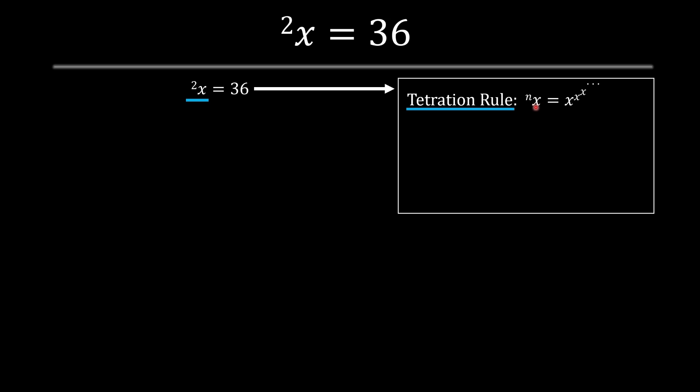The tetration rule states that x is raised to the power of itself n times. Once we apply it inside the equation, it means x is raised to x again. This is the equivalent statement.